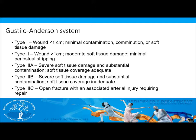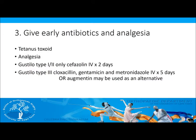This will determine which antibiotics the patient will be given and the amount of saline used for irrigation of the wound. It is best to give early antibiotics and analgesia. Administer tetanus toxoid and analgesia. Gustilo type 1 and 2 fractures with minimal contamination can be given cefazolin IV for 48 hours. Type 3 fractures which are highly contaminated are given tazocin, gentamicin, and metronidazole IV for 5 days. Augmentin may be used as an alternative.